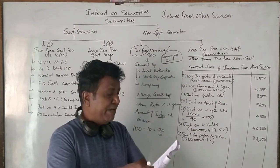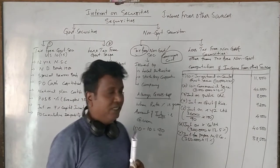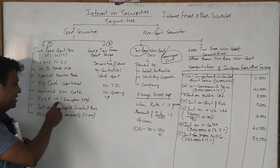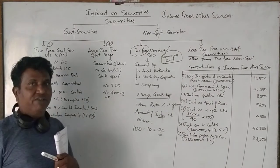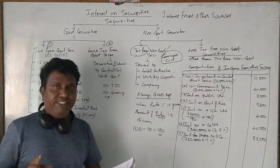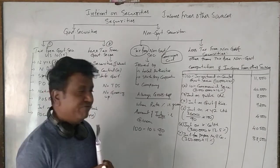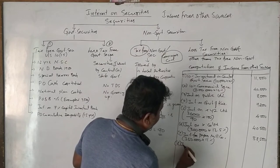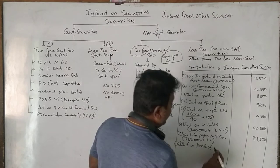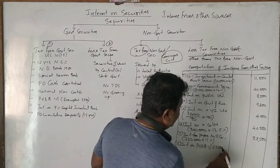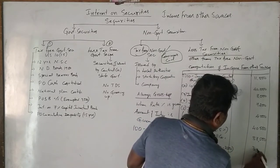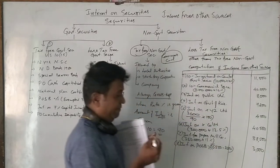Interest on post-office savings bank account: ₹6,500. Interest on post-office savings bank account is exempted up to ₹3,500. In this question, the interest earned is ₹6,500 — so ₹3,500 is exempted and the remaining ₹3,000 rupees is taxable.